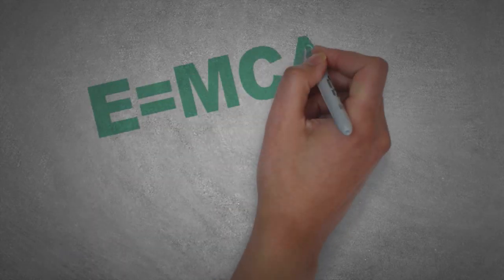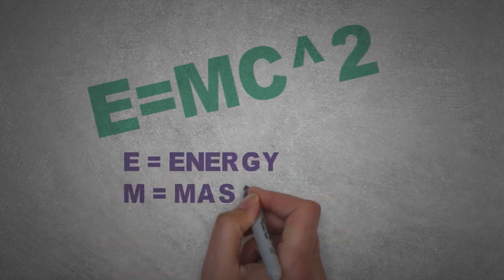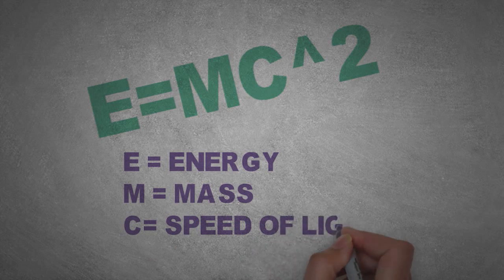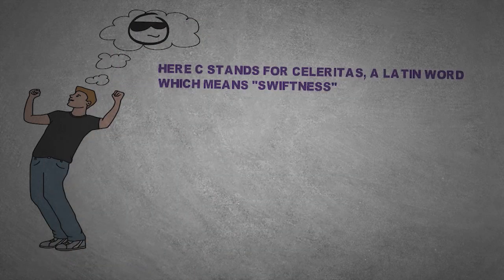This topic brings us to our next topic, the formula of mass energy equivalence. It is the most famous equation, and you probably have guessed it right. The equation is E equals MC squared, where E, M, and C stand for energy, mass, and the speed of light, respectively. C is used for the speed of light because C denotes celeritas, a Latin word which means swiftness.